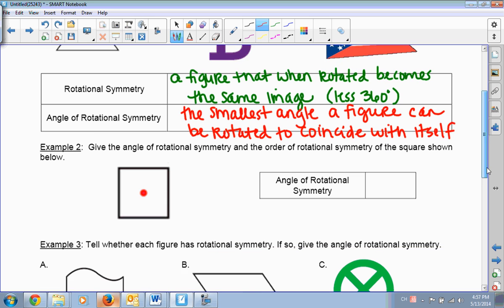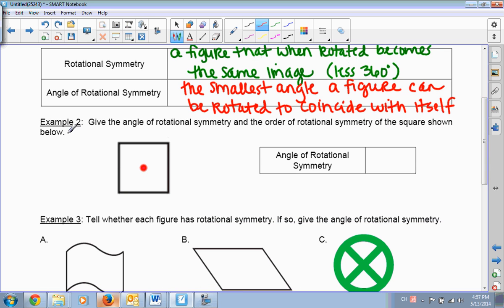Okay, so let's actually take a look at this. Example 2, give the angle of rotational symmetry and order of rotational symmetry of the squares shown below. So, okay, so we have a square. It has four sides. So how many degrees would I have to rotate it to get the square to look like a square again?